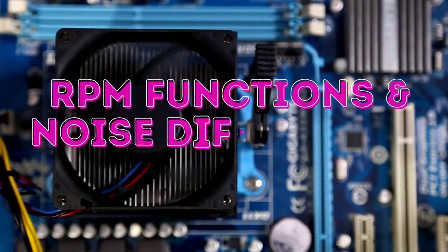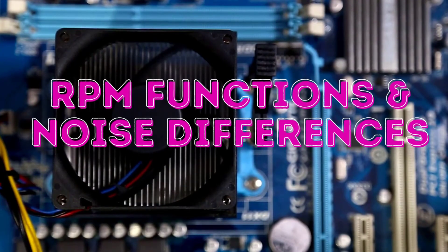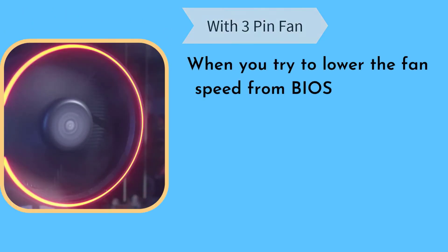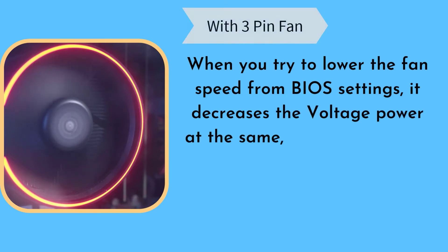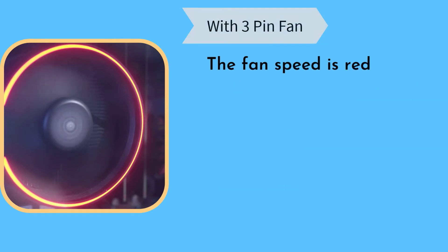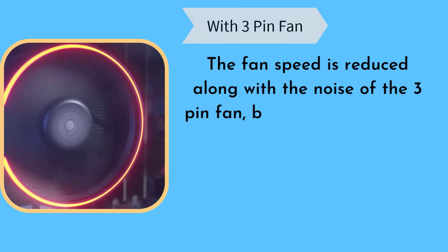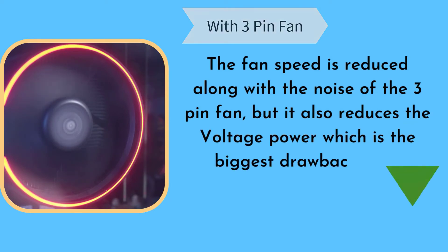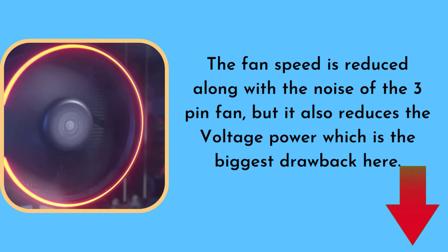The next battle comes for RPM functions and noise differences. In the case of a 3-pin fan, when you try to lower the fan speed from BIOS settings, it decreases the voltage power from 12V to 8 or 9V, depending on the speed reduction percentage. The fan speed and noise are reduced, but it also reduces the voltage power, which is the biggest drawback here.